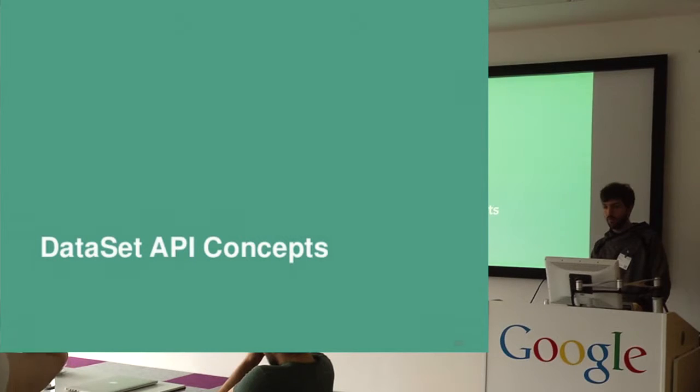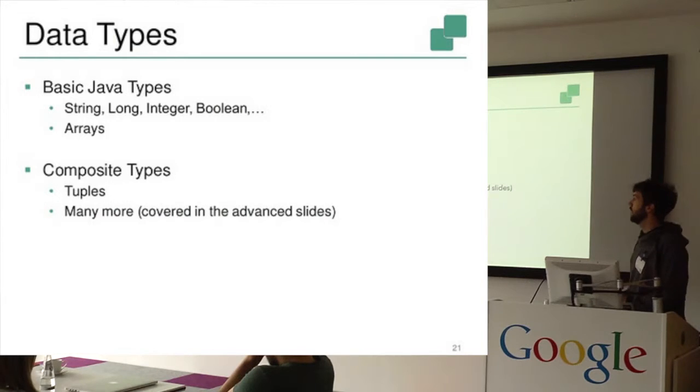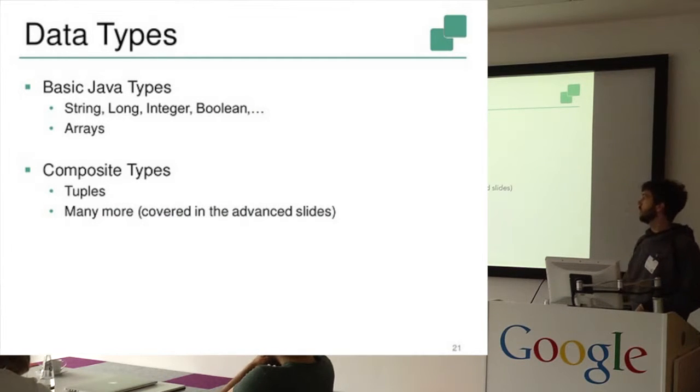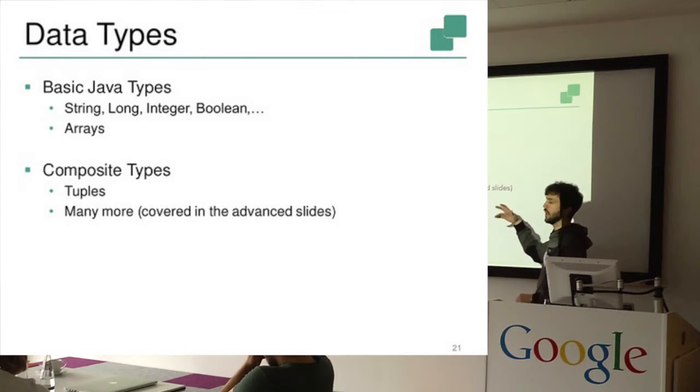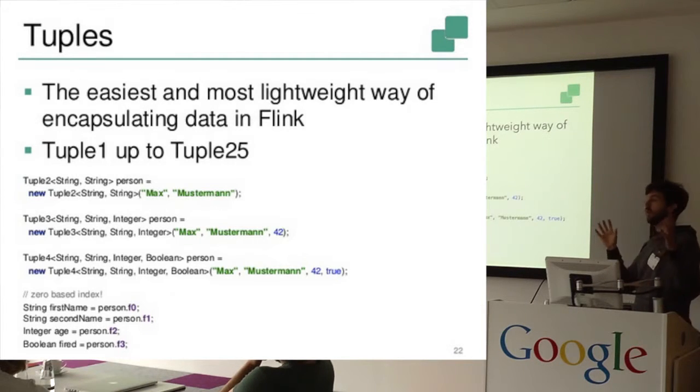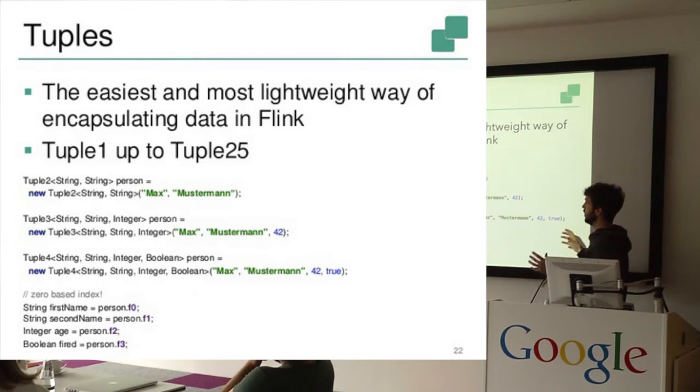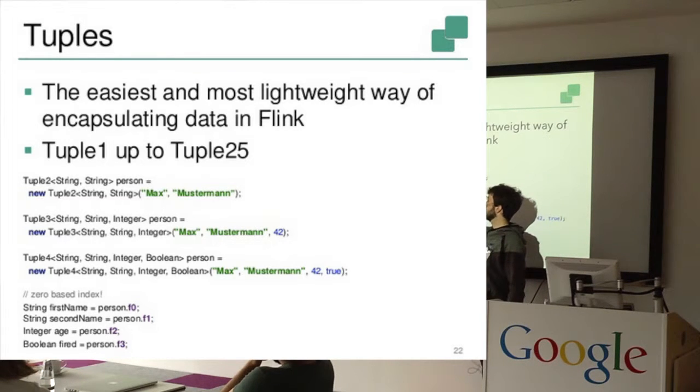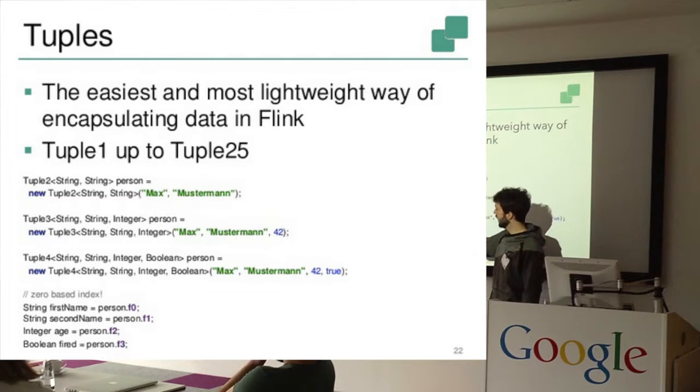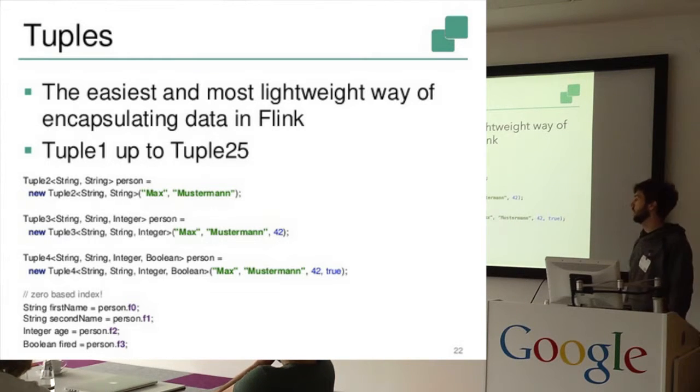So let me go over a few more concepts of the dataset API. We have, you already seen, we can use the basic Java types, which are strings, longs, integer, boolean, whatever, and the array variants of them too. But we can also create composite types, which there are quite a number of, but actually we just use tuples here, and tuples are a very nice way in Flink to encapsulate data. So the way you create it is just create this, for example, tuple two with first and the last name, or even tuple three or four. And if you want to access the fields, then you just specify the object dot f zero or f one. Just be sure that the first element's always the zero element, like in arrays.